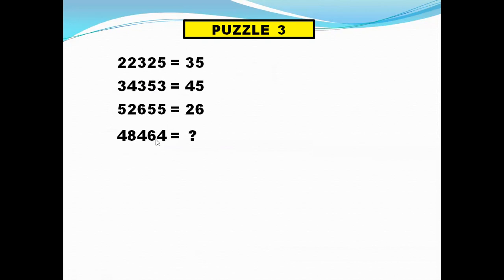Similarly we have 4 as the repeated number. So we cross out 4 and we get the number 86. So this is how we solve puzzle 3. Very interesting.